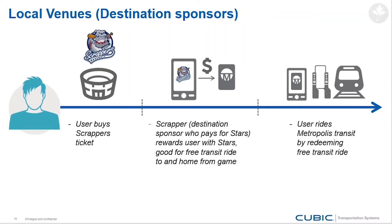Then there are what we call destination sponsors. Every transportation system operates in a city where there's stuff going on — sports teams, museums, restaurants, retailers. Those are destinations that people will travel to. If you're buying a ticket to a local sports team event, work with that sports team so that when you buy your ticket, loyalty points are issued — enough to get you to and from the game riding public transportation — creating that affinity and loyalty back to the transportation agency.